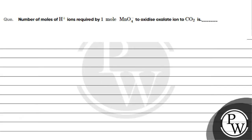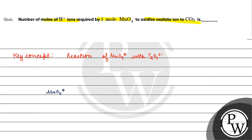Let's read this question: the number of moles of H+ ions required by one mole of permanganate ion to oxidize oxalate ion to carbon dioxide is dash. The key concept for this question is the reaction of MnO4⁻ with oxalate ion in acidic medium.